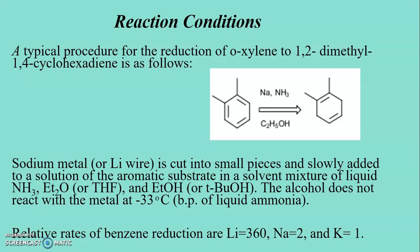Reaction Conditions for Birch Reduction: A typical procedure for the reduction of orthoxylin to 1,2-dimethyl-1,4-cyclohexadiene is as follows. Sodium metal is cut into small pieces and slowly added to a solution of the aromatic substrate in a solvent mixture of liquid ammonia, diethyl ether or THF, and ethanol. Instead of ethanol, we can also use tertiary butyl alcohol.